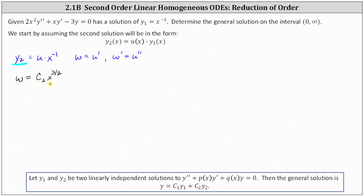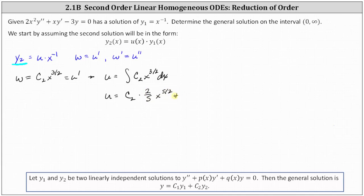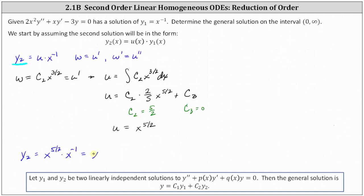We know w equals c sub two times x to the power of three halves, and w equals u prime, which means we recover u by integrating c sub two times x to the power of three halves with respect to x. This gives u equal to c sub two times x to the power of five halves divided by five halves, or two fifths x to the power of five halves, plus a constant c sub three. Since u is a family of functions, let's let c sub three equal zero and c sub two equal five halves, giving us u equals x to the power of five halves. Therefore our second solution y2, which equals u times x to the power of negative one, is x to the power of five halves times x to the power of negative one, which equals x to the power of three halves.